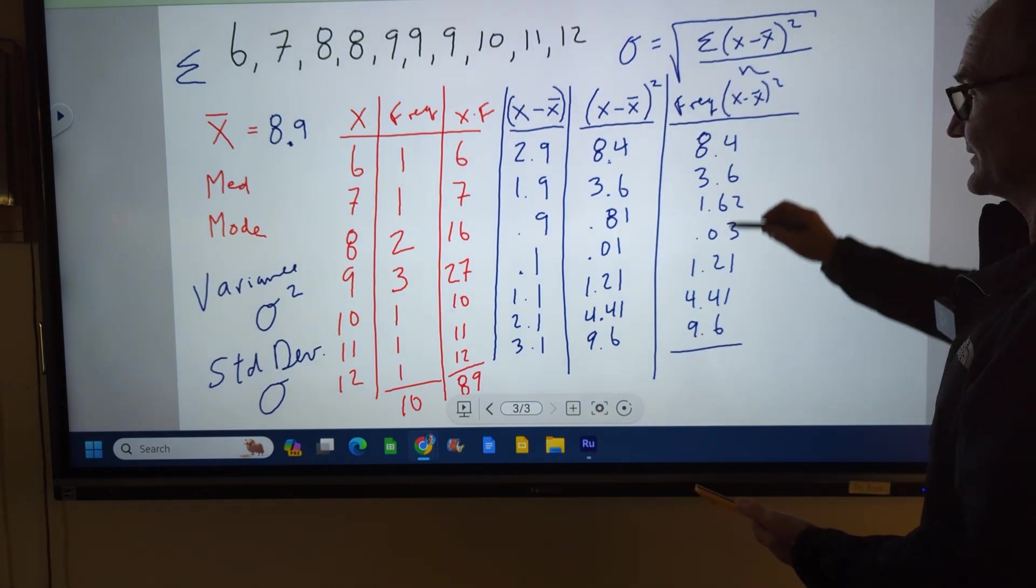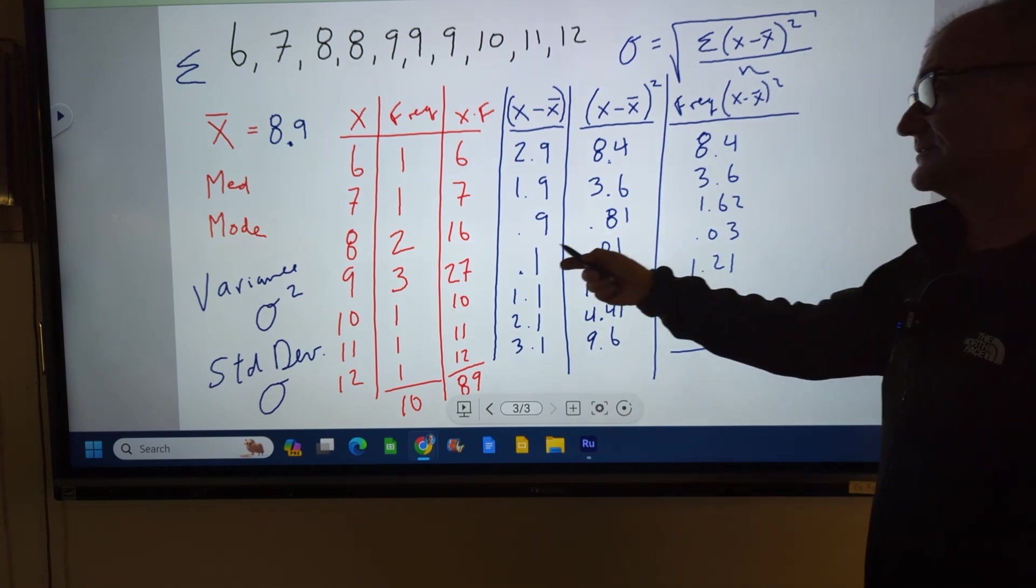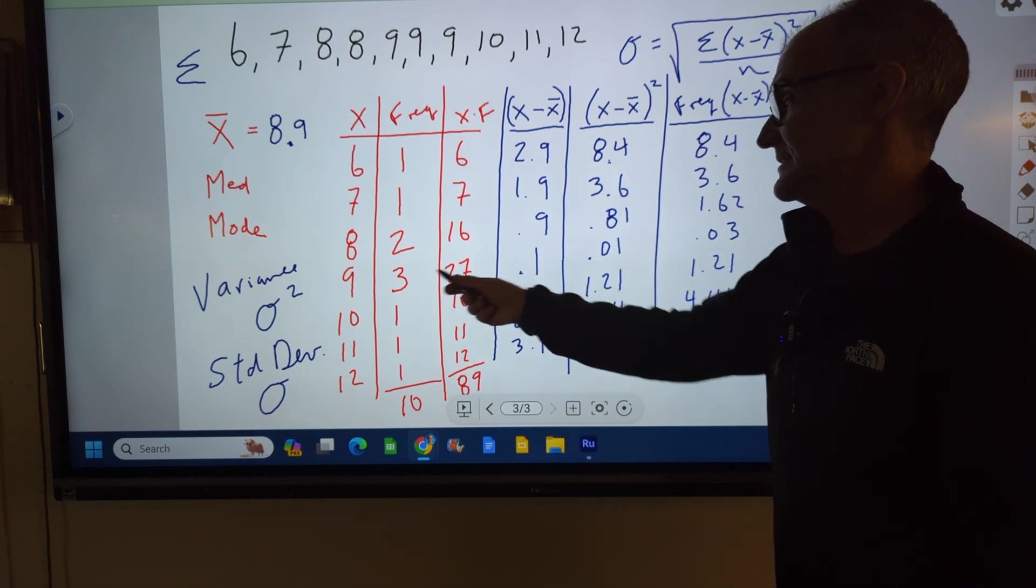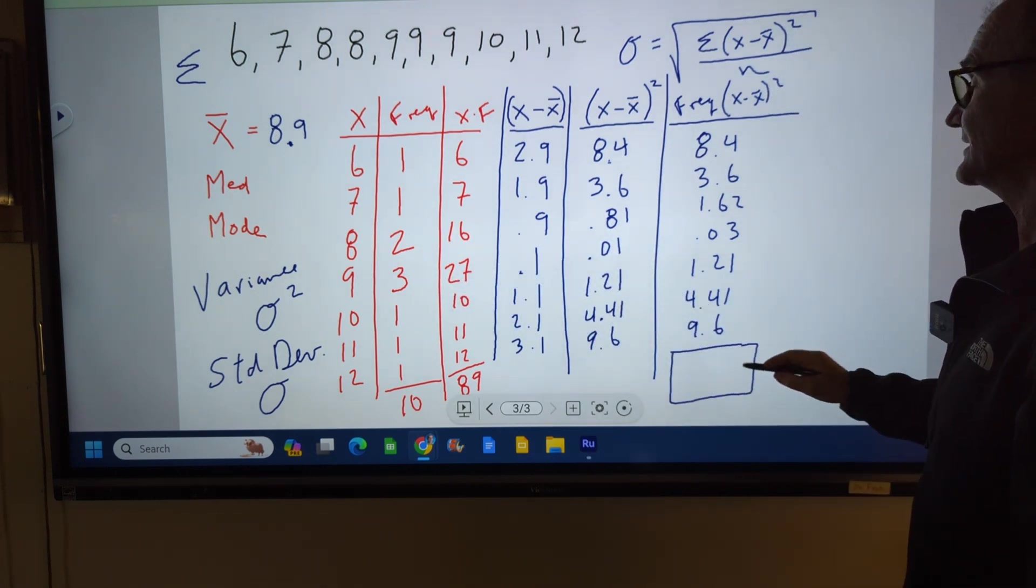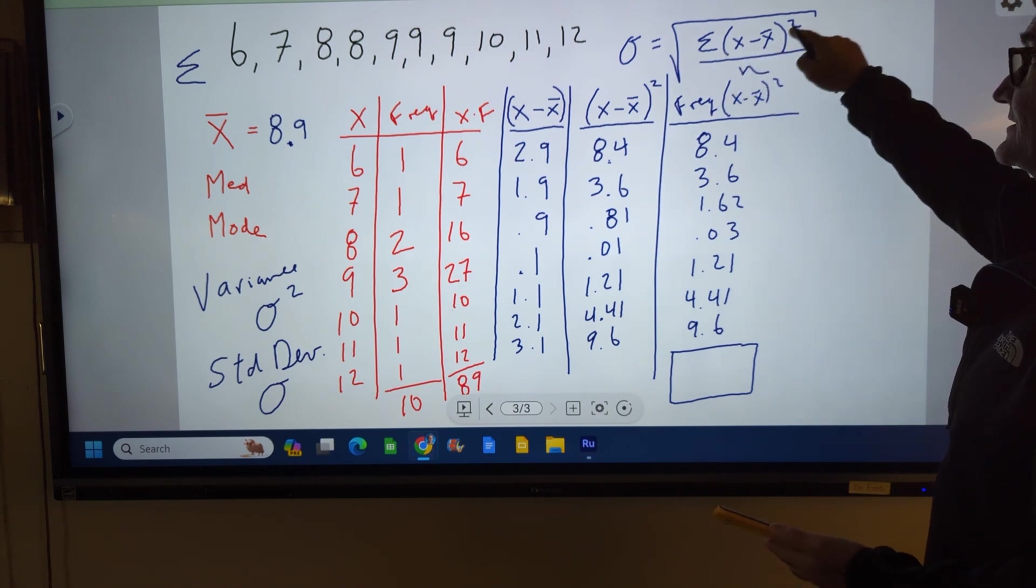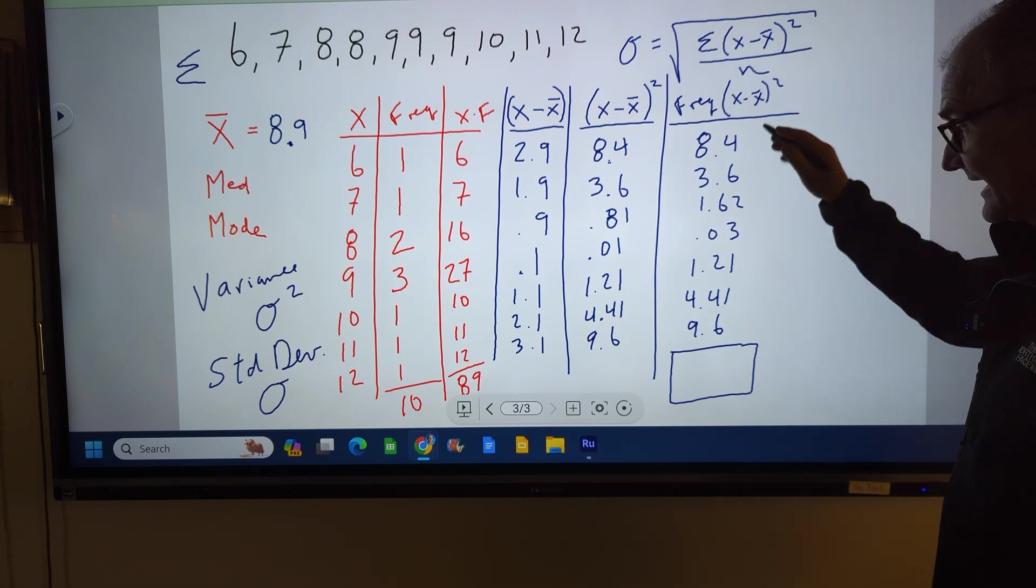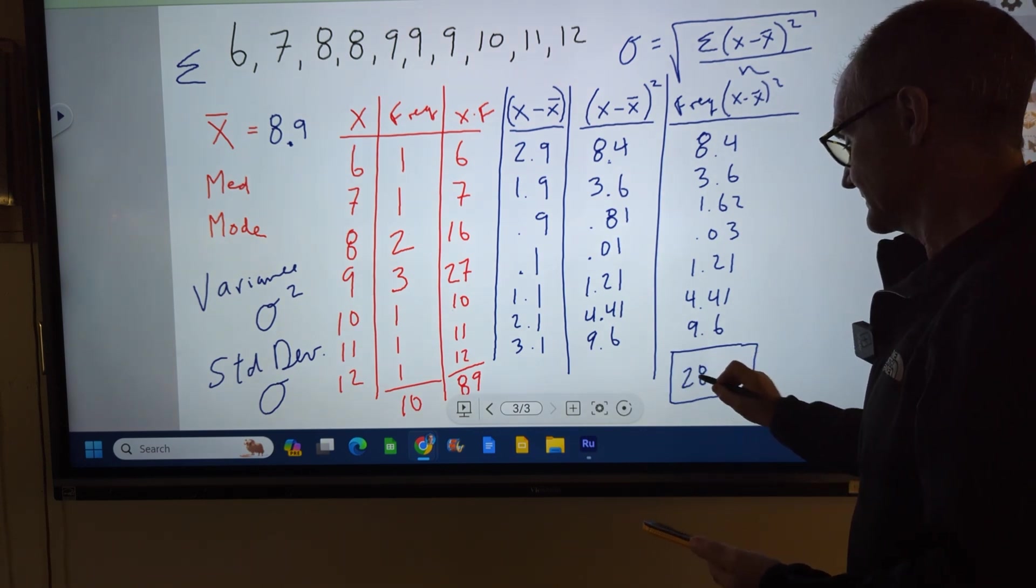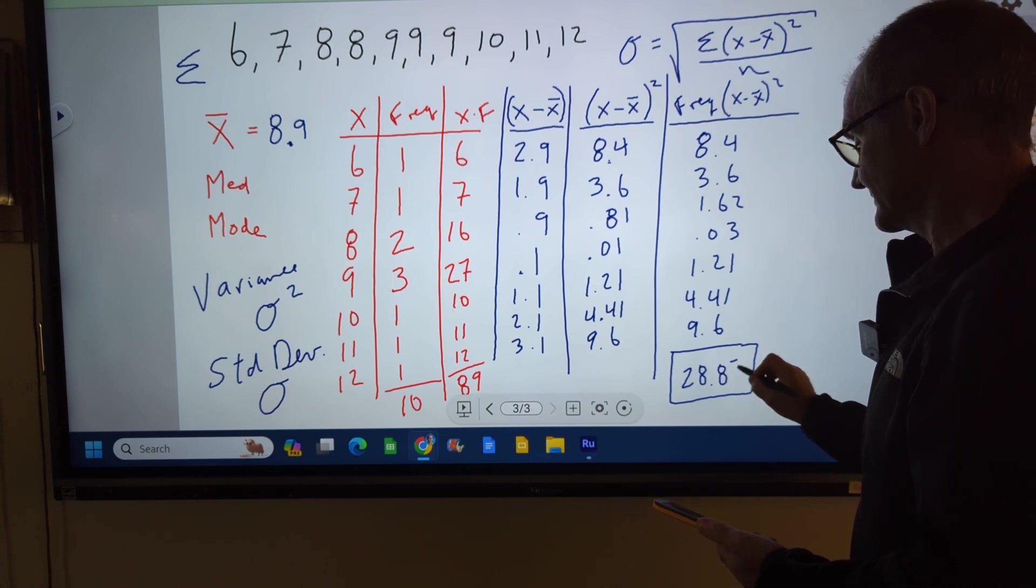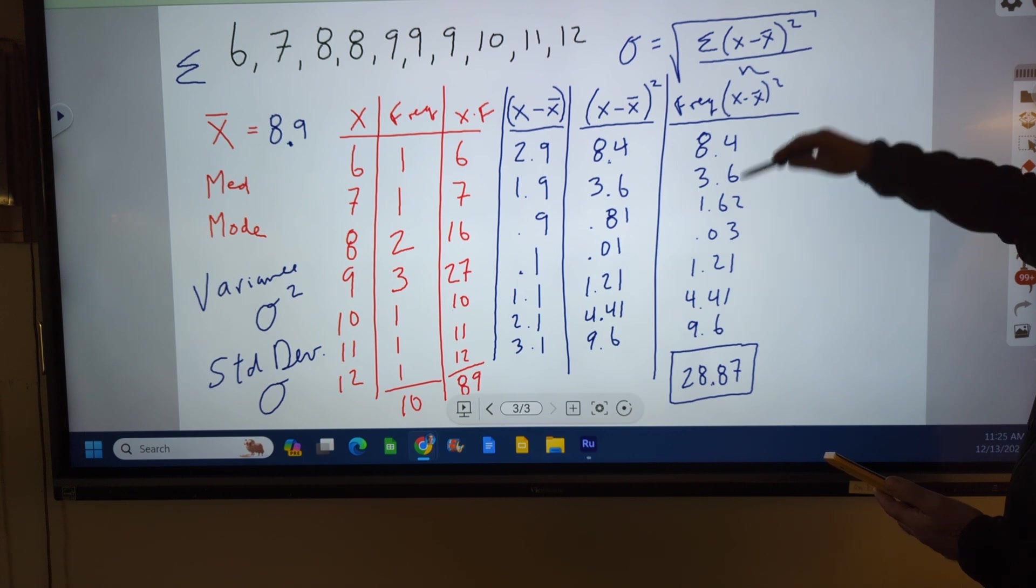So this is actually all 10 of my values. So I'm going to add up these 10 values. And I'm calling it 10 because I've included the 2 of these and the 3 of these. So I'm going to add all this up. This right here is going to be the sum of deviation squared. So let me do that on my calculator. I add all these up and it's summed to 28.87. So that is the sum of my deviation squared.